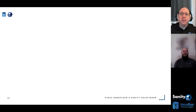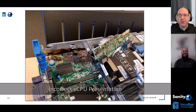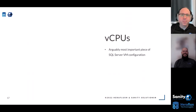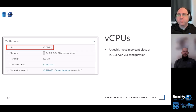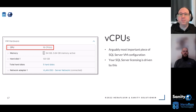Bottom line: don't do incorrect vCPU presentation. Virtual CPU presentation is arguably the most important component of your SQL Server virtual machine configuration, because your SQL Server licensing is driven off of this core count. If we assign too many cores, we have to pay for that many cores, and SQL Server licensing is not cheap — these figures can literally make the environment underneath a rounding error on your budget.